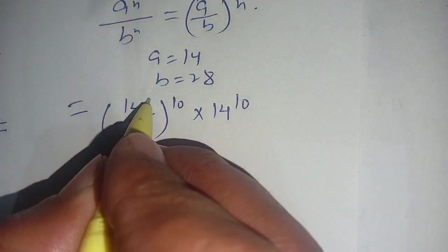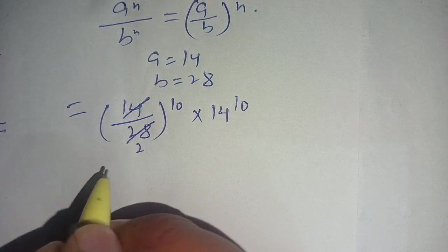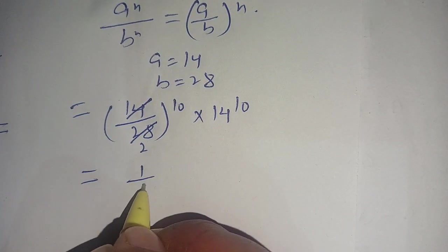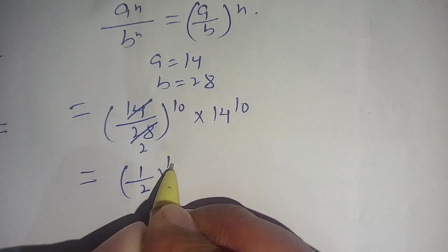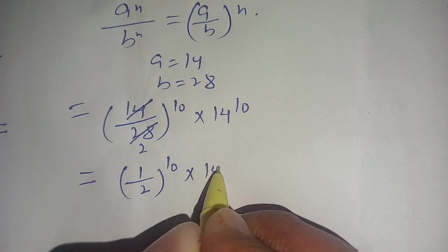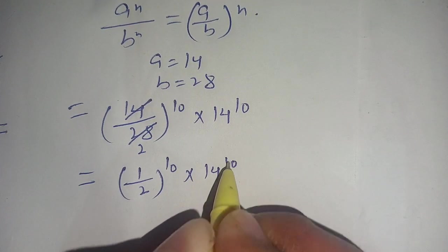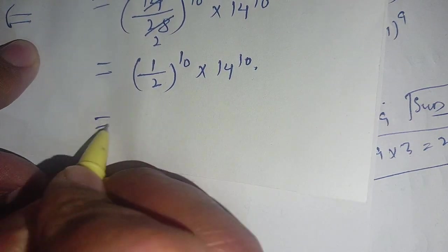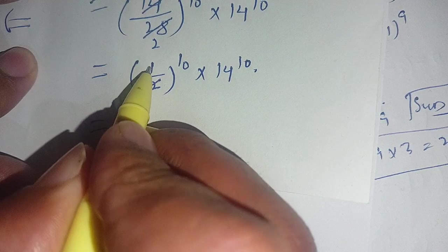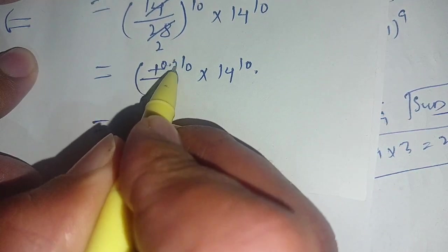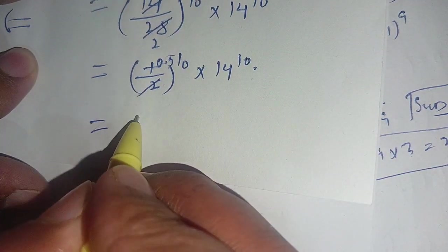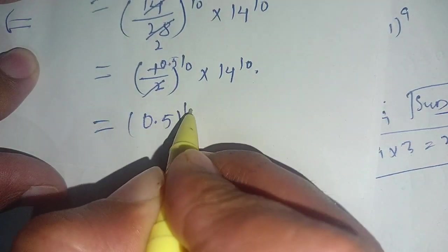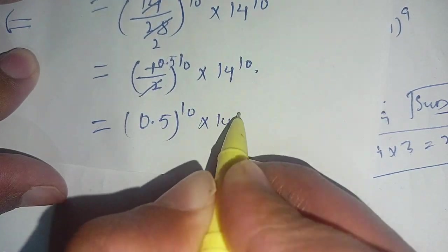Now we know that 14 times 2 becomes 28, thus 14 divided by 28 is equal to 1 over 2. So this becomes (1/2) whole power 10 times 14 power 10. We can write it as 0.5 power 10 times 14 power 10.